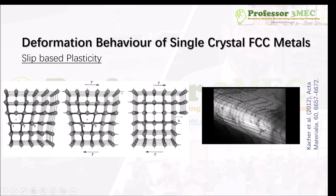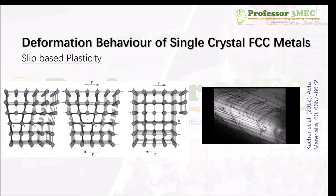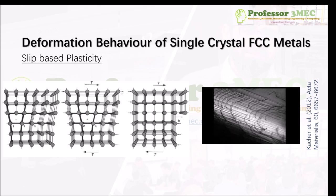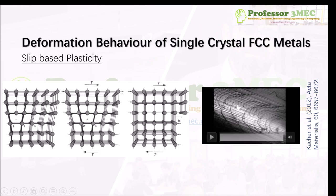When we talk about slip-based plasticity, we have missing planes in the crystal structure — these are called line defects or dislocations. When you apply loading, such as shear stresses, these dislocations start to move along the crystal. That dislocation motion is always along a certain plane in a certain direction, which is why it's called slip-based plasticity. People have monitored this slip motion due to dislocation gliding in situ under a TEM (transmission electron microscope), observing how dislocations move, glide over one another, and cross-glide.